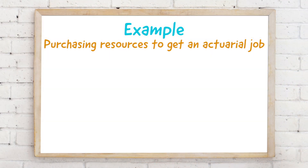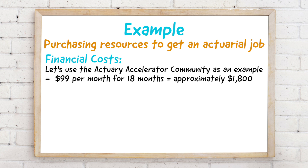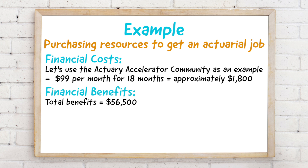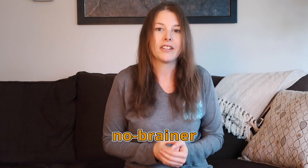Using just those three factors, your total benefit is going to be about fifty-six thousand five hundred dollars. In the ROI calculation you compare this to the financial cost — let's use the Actuary Accelerator community as the example, where no one is likely to pay more than eighteen hundred dollars. Put that into the ROI calculation and you get an ROI of 30 — a huge payoff, and that's not even counting income from future years in that actuarial role.